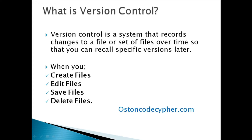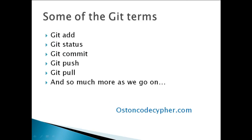That's one of the important features of this version control system — you can easily recall specific versions later. For example, if we accidentally delete a file, we can revert back and recover it, as long as we don't delete the repository. All the terms I've been using, you'll be learning in this video series, including git add, git status, git commit, git push, git pull, and much more — so you'll know what all these commands do in your day-to-day work.